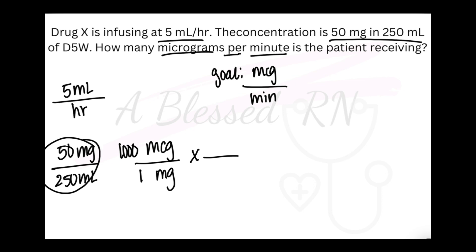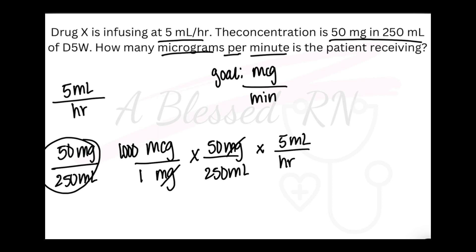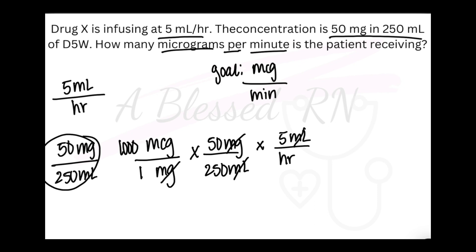Now I have milligrams on the bottom, so I'll need milligrams on the top — so 50 milligrams over 250 milliliters. Milligrams cross out. Now I have milliliters on the bottom, so I need milliliters on the top — 5 mLs over an hour. Milliliters cross out. Now I have hours on the bottom, so I'll put one hour over 60 minutes, and my hours cross out. Everything is gone now except for our goal.